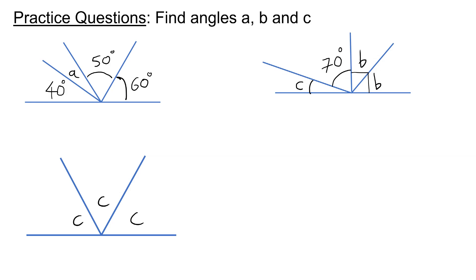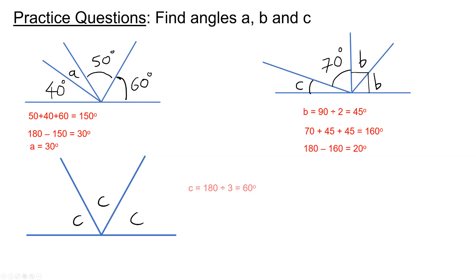Here are the answers. A should be 30. B should be 45 degrees. And C should be 20 degrees. And in the last question, C should be 180 divided by 3, which is 60 degrees.